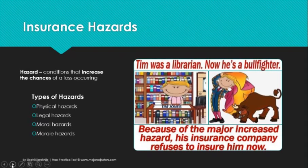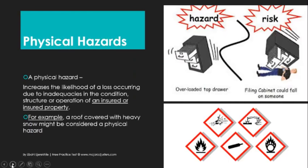There are four different types of hazards: physical, legal, moral, and morale. Physical hazards — just like with our friend Tim Jones — a filing cabinet wouldn't be a hazard or a risk if it's loaded properly. The hazard is the overloaded top drawer. The risk is the filing cabinet falling on somebody and hurting them, causing them to miss work. Physical hazards also include fire and machinery.